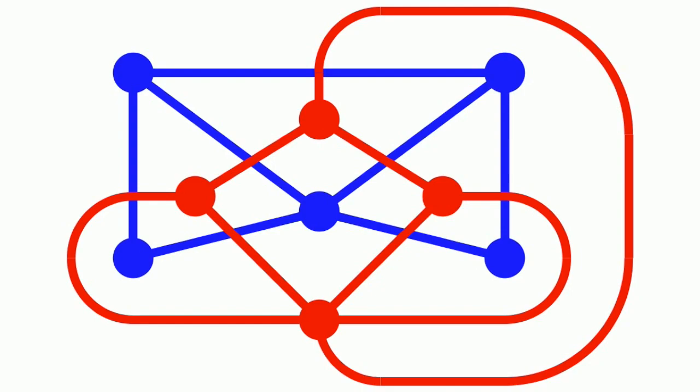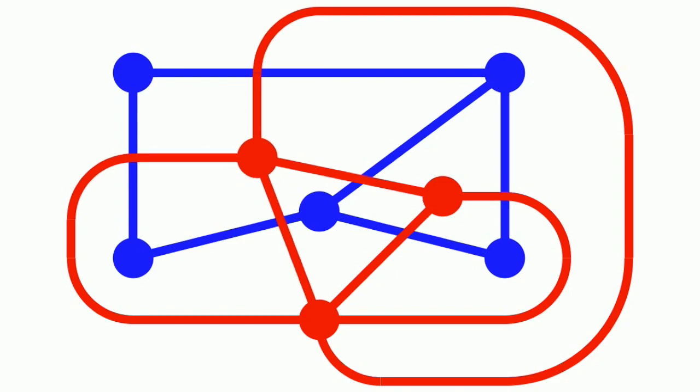Now, if one of the blue edges is deleted, its corresponding red edge is contracted, merging the two red nodes into one. Likewise, if a blue edge were to be contracted, it would amount to deleting its corresponding red edge.